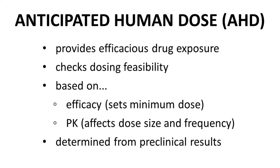Efficacy drives the minimum dose — the minimal amount of drug to achieve a desired therapeutic benefit. PK affects the size of the dose as well as the dosing frequency. The dose amounts and frequency predictions are generated from the preclinical data gathered up to that point in the discovery program. Safety is critically important, but the anticipated human dose is typically estimated before all the preclinical safety data are complete.